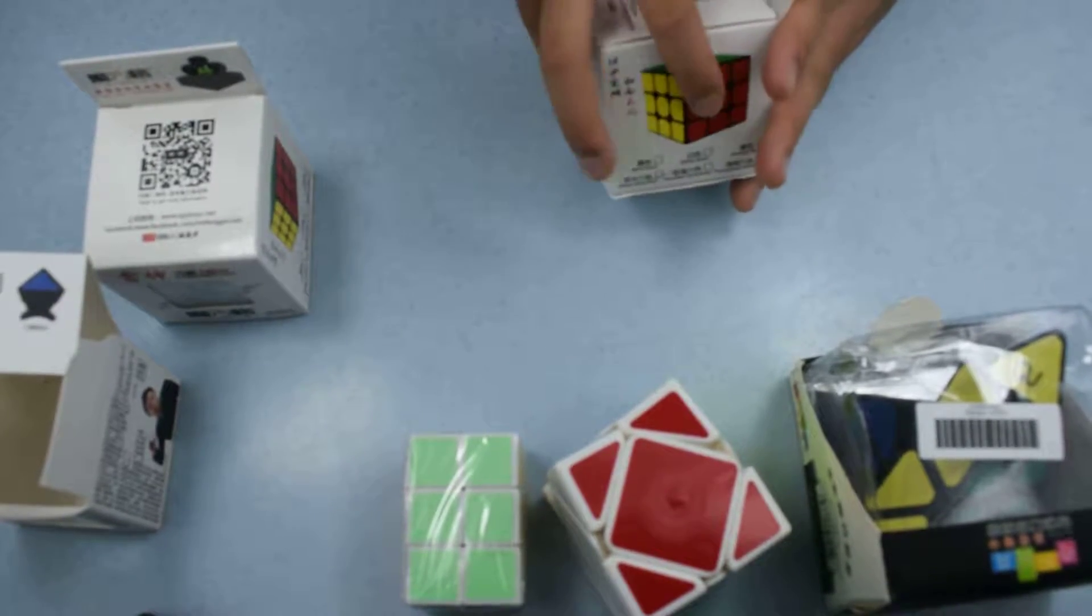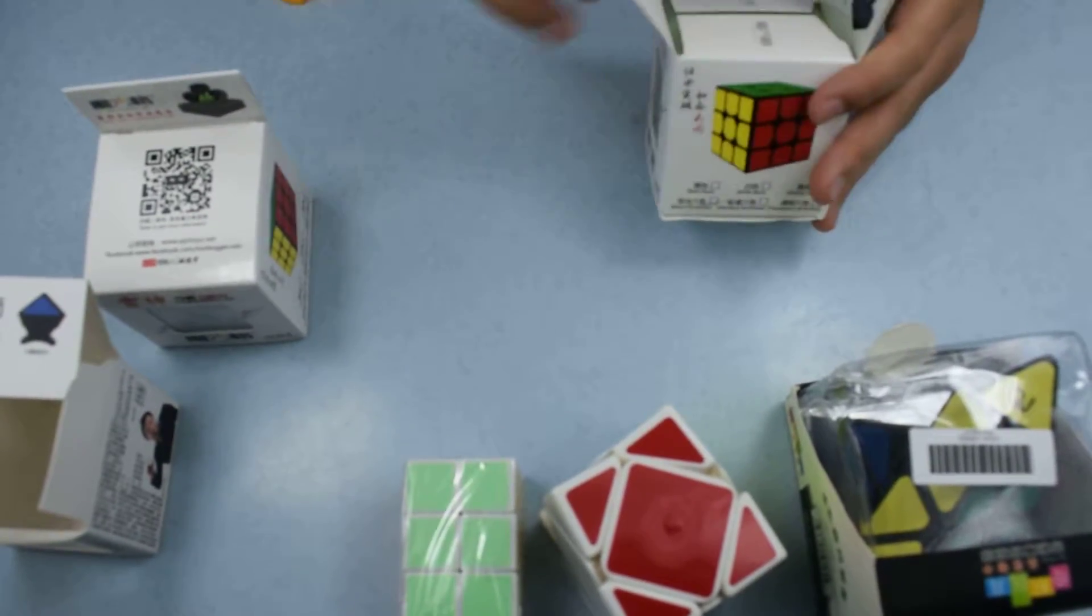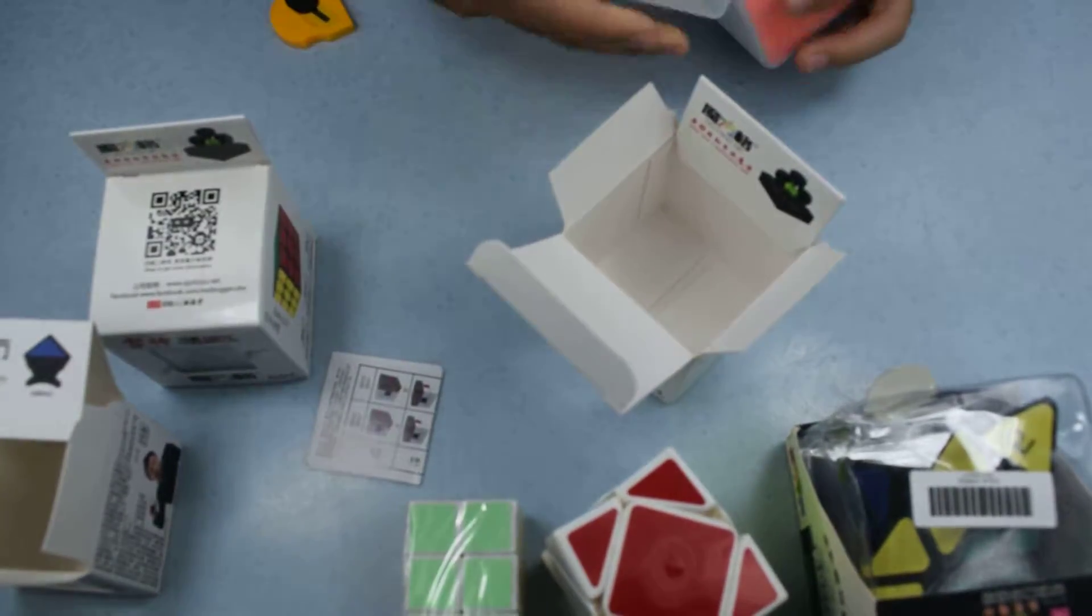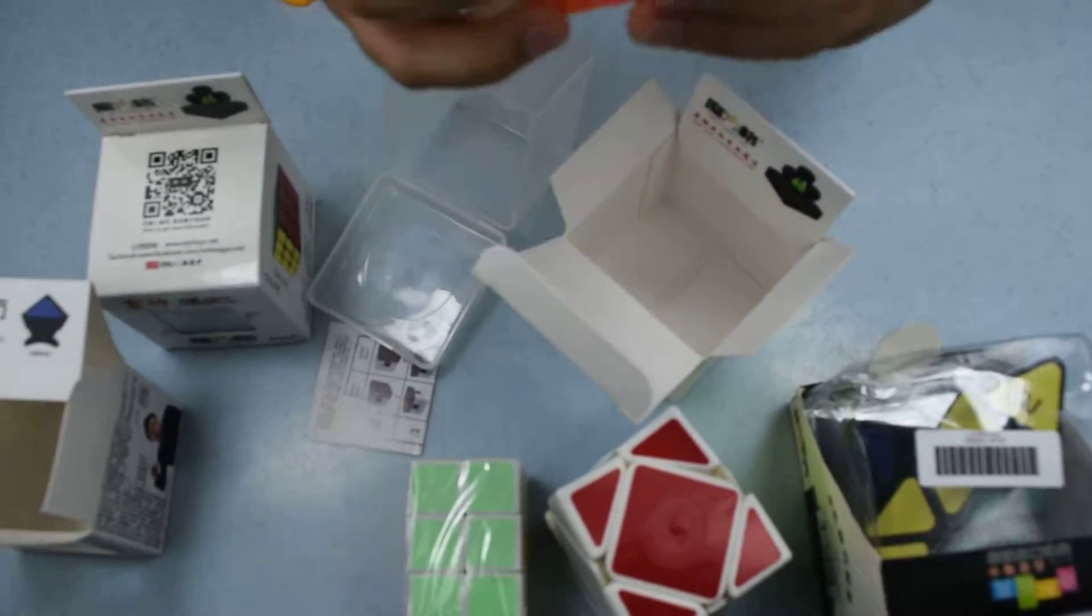Let's check out the MoFangee tree by tree. I don't even know how to pronounce it. Oh, look. This is a stickless one. I like stickless cubes. Look at this.